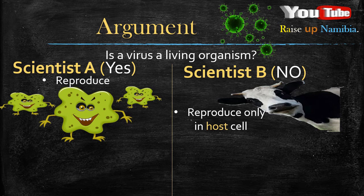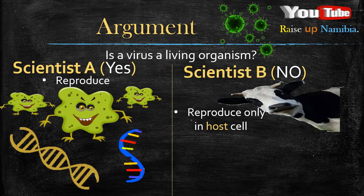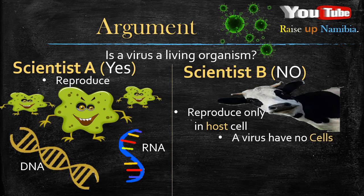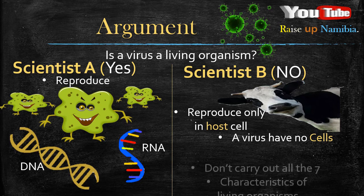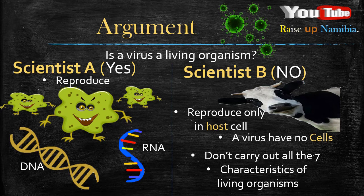Scientist A goes on to argue that yes, viruses are living organisms because they have genetic material which can be either DNA or RNA. Scientist B counters that no, viruses are not living organisms because they don't have cells and they don't carry out all seven characteristics of living organisms. So these are the key arguments of whether or not a virus is a living organism.